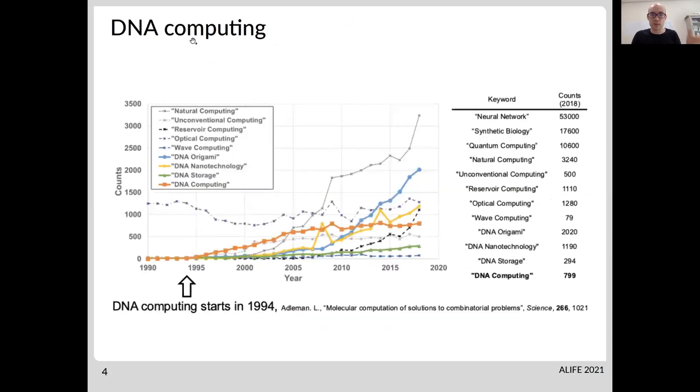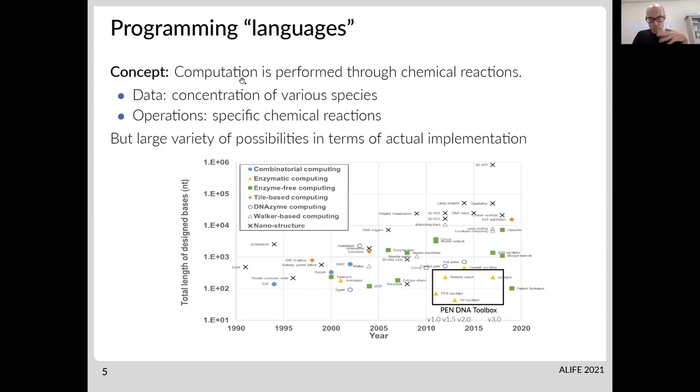So more specifically, we are focusing on something called DNA computing, which is one of those approaches working at the molecular scale where we are specifically using DNA molecules and enzymes working with DNA. The reason for that is that we can easily program what will interact with what through DNA sequences. There have been a large variety of approaches using DNA and enzyme proposed over the years.